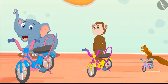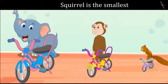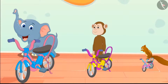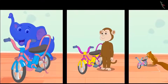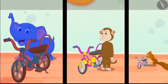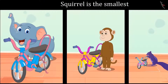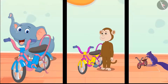Yes, you thought right, children! The squirrel is the tiniest among the three animals and its bicycle is also the smallest. This means the squirrel will get the smallest bicycle. And the monkey's bicycle is the middle-sized one. The elephant is the biggest among the three friends so he took the biggest bicycle, and the squirrel is the smallest so it has taken the shortest bicycle.